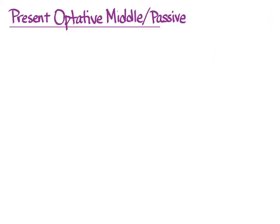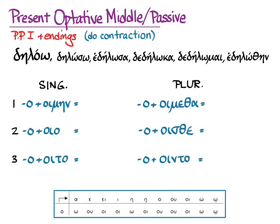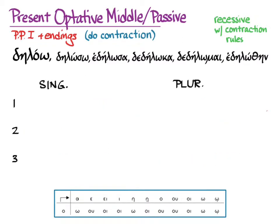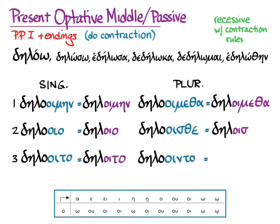Now the present optative middle/passive: first principal part and endings, so we'll need the omicron and the endings we know. After contraction — and no alternate forms this time — with recessive accent and contraction rules, applied to delao with those stems and endings contracted, our final forms are: dēloimēn, dēloio, dēloito, dēloimētha, dēloisthe, dēlointo.